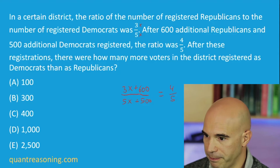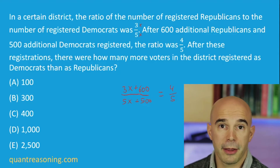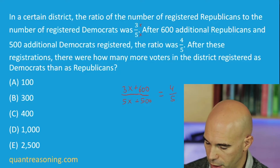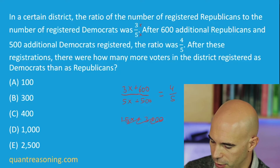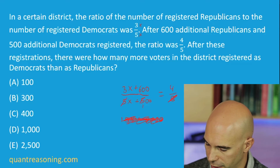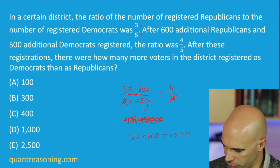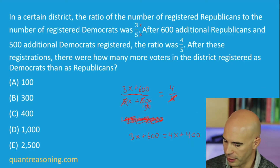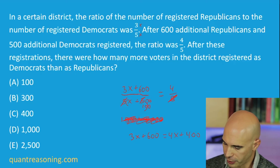We do a bit of algebra, expanding this equation by both denominators. A great idea is to first expand the ratio by a factor of 5, giving us: 3X + 600 = 4X + 400. So we're expanding the equation by a factor of X + 100.